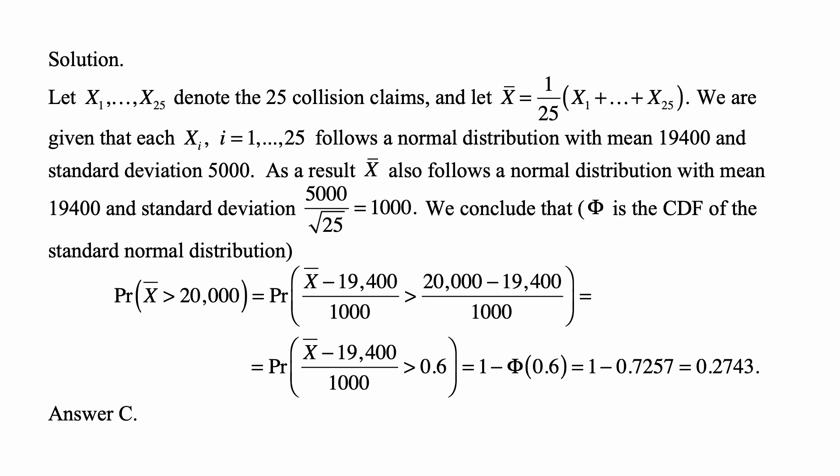So the variance of x-bar is the sum of the variances divided by 25 squared, and that comes out to be 5,000 squared divided by 25. The square root of that is 5,000 divided by the square root of 25, which is equal to 1,000.